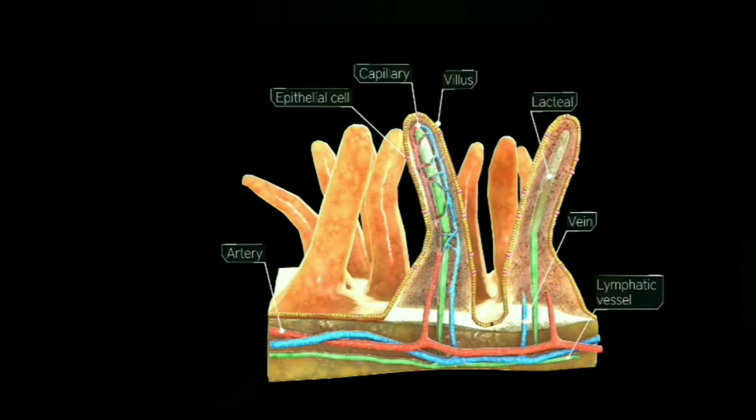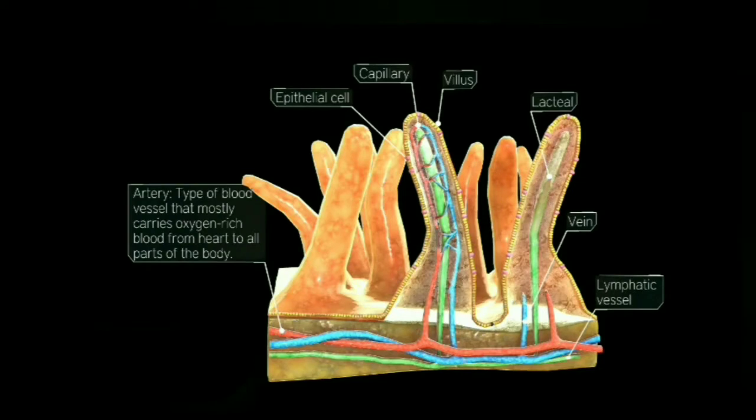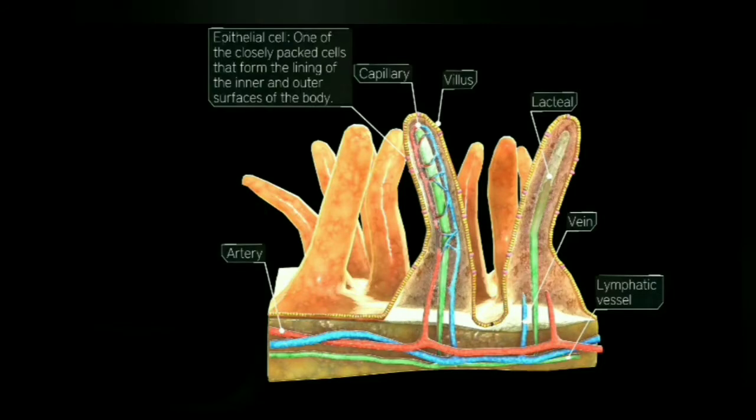First one is artery. It is a type of blood vessel that mostly carries oxygen-rich blood from heart to all parts of the body. Second one is epithelial cell. It is one of the closely packed cells that form the lining of the inner and outer surfaces of the body.